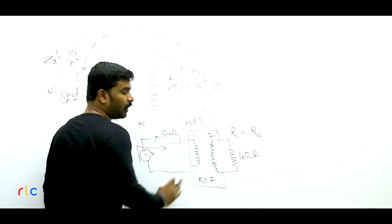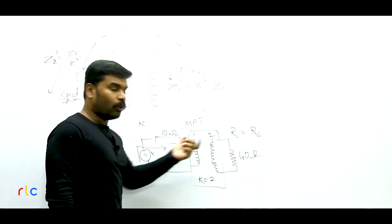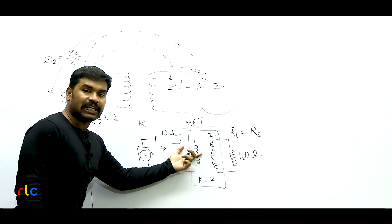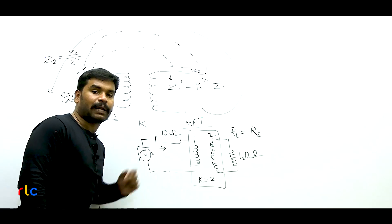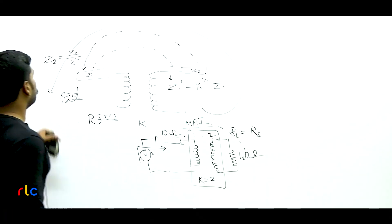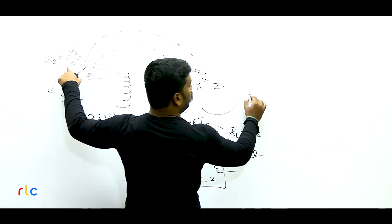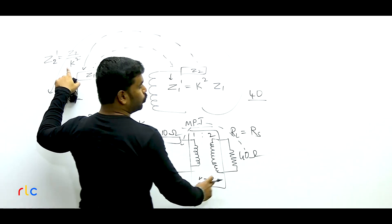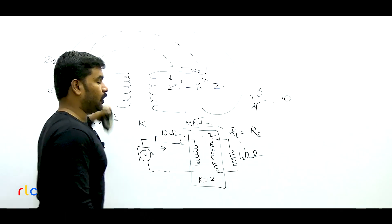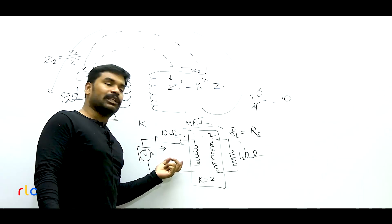Option D cannot be correct. You cannot neglect iron losses because iron losses (eddy current losses + hysteresis losses) are functions of frequency. They can only be neglected at very low frequencies — like in an induction motor rotor where rotor frequency is around 2-2.5 Hz. In a transformer operating at rated frequency, iron losses cannot be neglected.